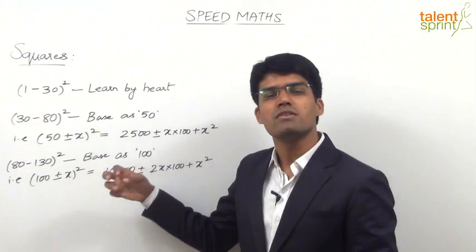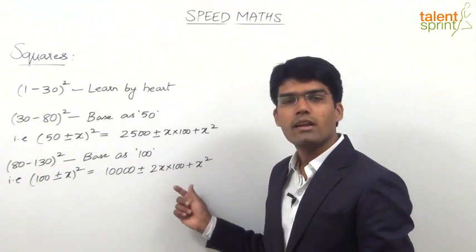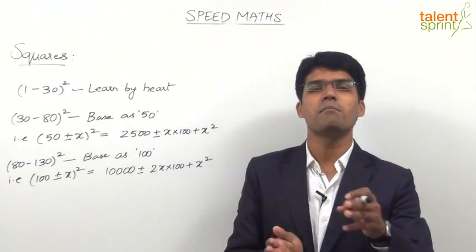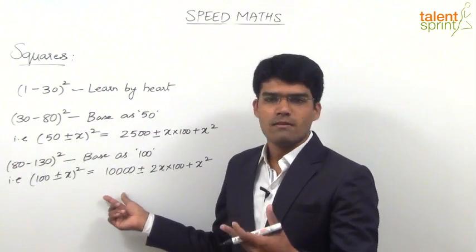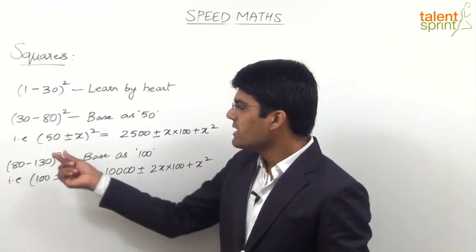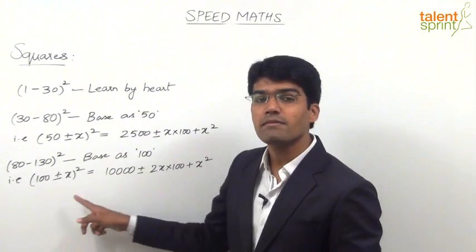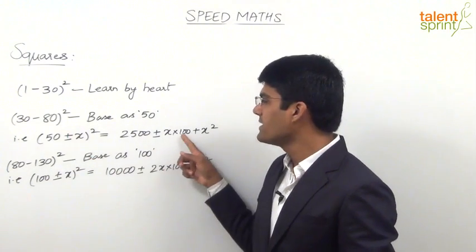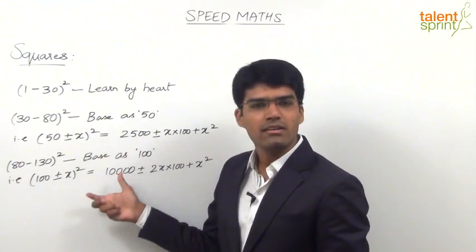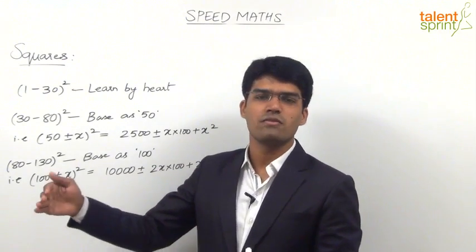For squares of numbers more than 130, consider the base as 150. Write 150 plus or minus x, whole squared, and identify the three terms. For example, 144 squared — that is beyond 130, so it is taken as 150 minus 6, whole squared. The first term is 150 squared, which is 22,500, and the second term becomes 3x into 100. The pattern is clear: for base 50 it is x into 100; for base 100, 2x into 100; for base 150, 3x into 100. You can also use base 200, 250, and so on, and the last term is always x squared.